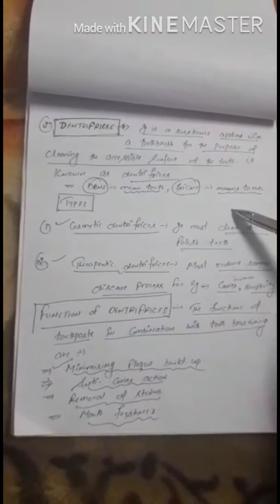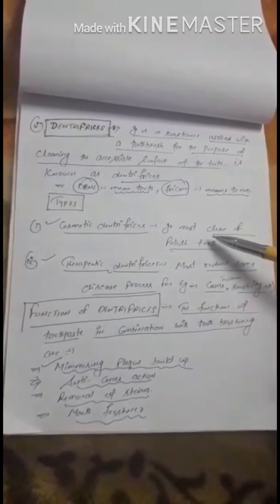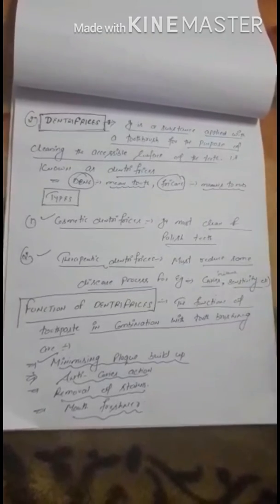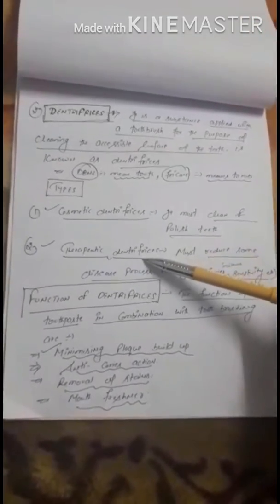There are two words in dentifrice: first is 'dens,' which means tooth, and 'fricare,' which means to rub. Dentifrice is mainly of two types: first is cosmetic dentifrice and the second is therapeutic dentifrice. Cosmetic dentifrice, like toothpaste, is used to simply clean and polish the teeth.